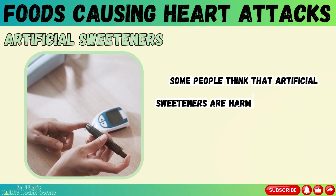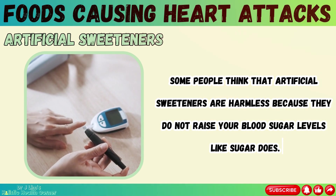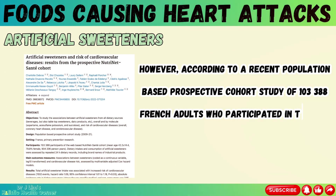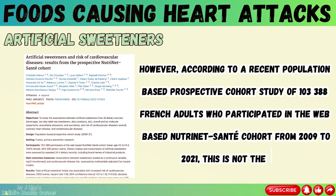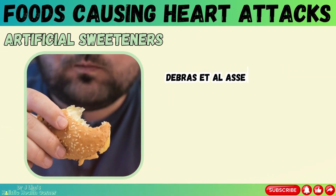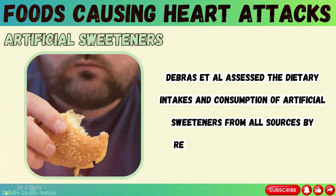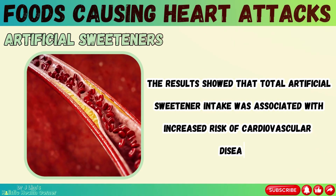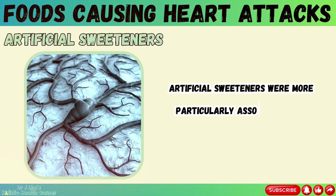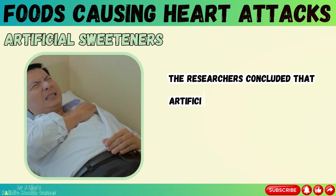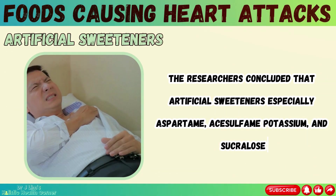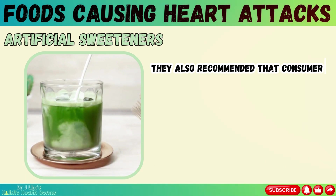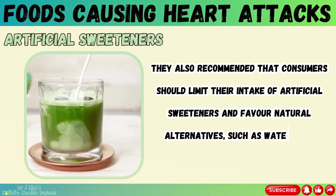Some people think that artificial sweeteners are harmless because they do not raise your blood sugar levels like sugar does. However, according to a recent population-based prospective cohort study of 103,388 French adults who participated in the web-based Nutrinet-Santé cohort from 2009 to 2021, this is not the case. The results showed that total artificial sweetener intake was associated with increased risk of cardiovascular diseases, and more particularly with cerebrovascular disease risk. The researchers concluded that aspartame, acesulfame potassium, and sucralose were associated with increased risk of cardiovascular, cerebrovascular, and coronary heart diseases, and recommended limiting intake in favor of natural alternatives such as water, tea, coffee, or fruits.